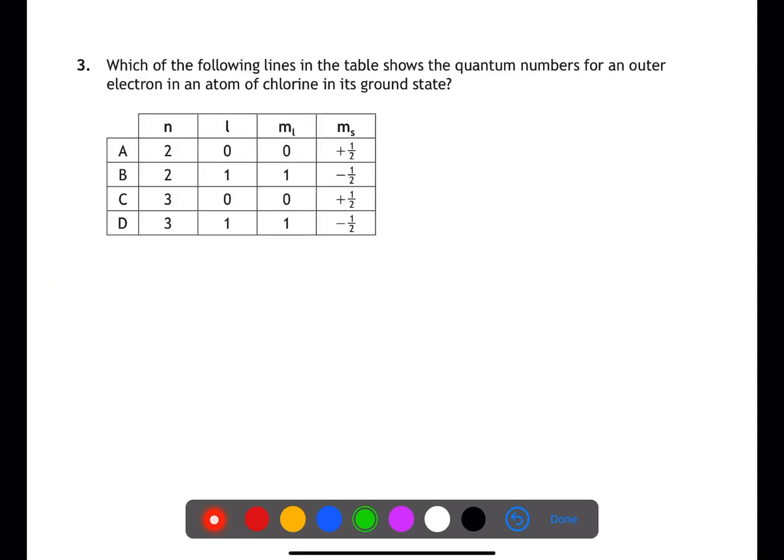For question three, we need to understand the rules which show how electrons fill within the orbitals in an atom. Looking at the basic electron configuration for chlorine, we have 2,8,7. This breaks down further into 1s2, 2s2, 2p6, 3s2 and 3p5.